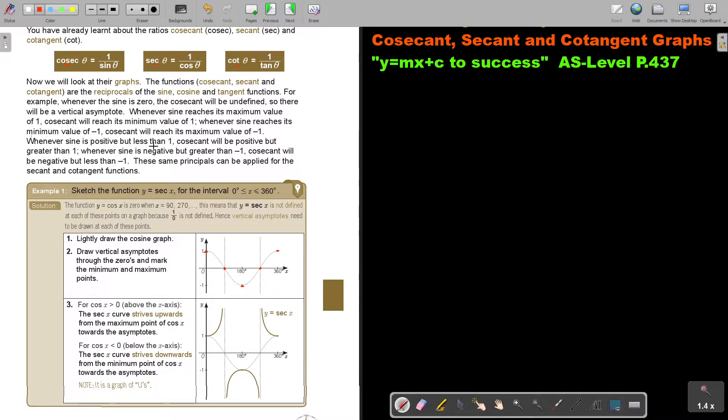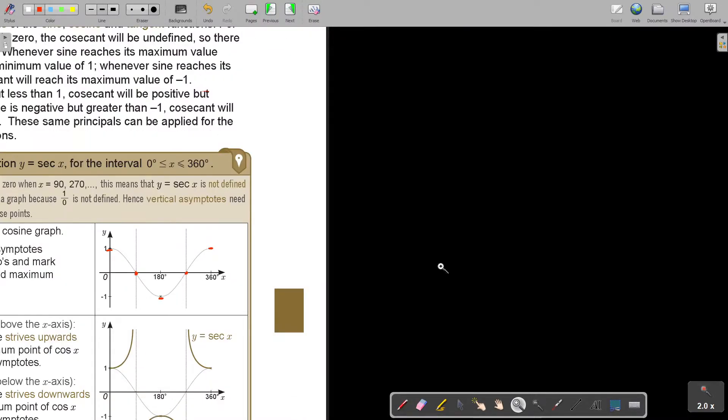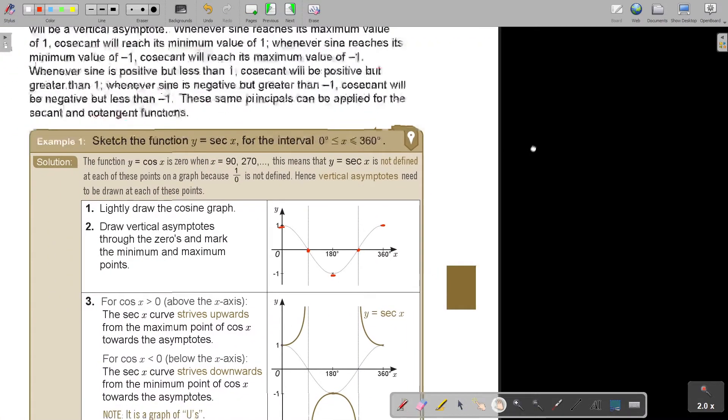Whenever sine is positive but less than 1, cosec will be positive but greater than 1. Do you see? It's also positive, but it's greater, going up. This was going down, this is greater. Whenever sine is negative but greater than -1, cosec will be negative but less than -1. It's negative, going down, and there is the maximum point at -1. These same principles can be applied for the secant and cotangent functions. Let's look at the graph. I'm going to make it a bit bigger.